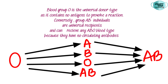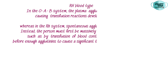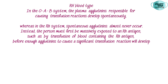The next blood type is the Rh blood type. The difference between the ABO system and the Rh system is that in the ABO system, plasma agglutinins responsible for causing transfusion reactions develop spontaneously, whereas in the Rh system these spontaneous agglutinins almost never occur. A person must first be massively exposed to an Rh antigen, either by transfusion of blood containing the Rh antigen, before enough agglutinins develop to cause a significant transfusion reaction.